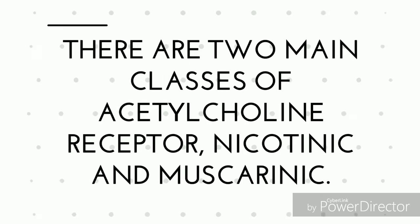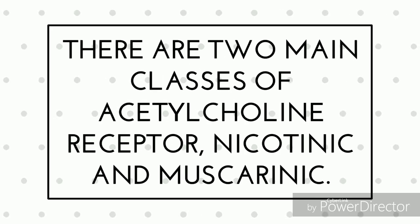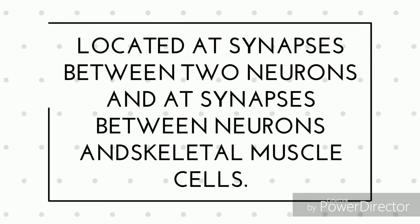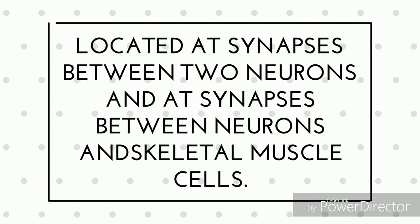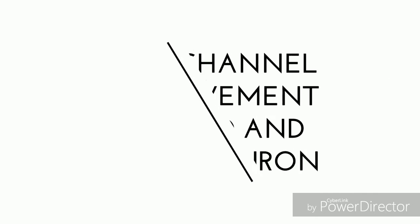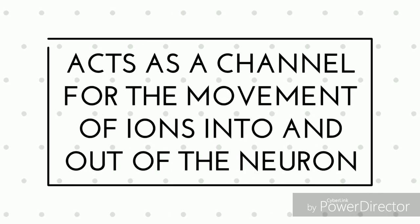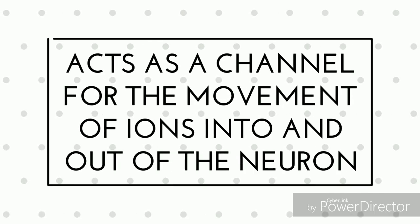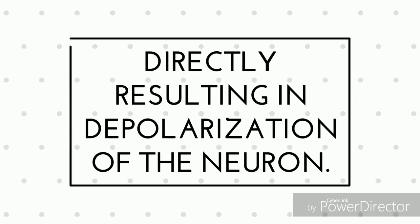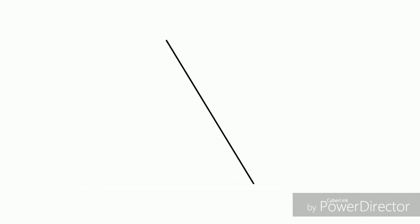There are two main classes of acetylcholine receptor: nicotinic and muscarinic. Nicotinic receptors are located at synapses between two neurons and at synapses between neurons and skeletal muscle cells. Upon activation, a nicotinic receptor acts as a channel for the movement of ions into and out of the neuron, directly resulting in depolarization of the neuron.